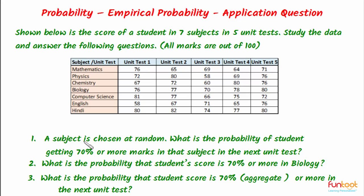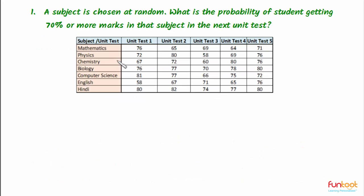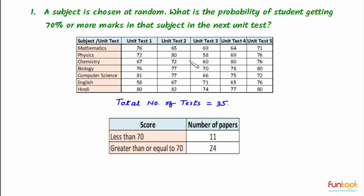First part is: a subject is chosen at random. What is the probability of the student getting 70% or more marks in that subject in the next unit test? There are 7 subjects and for each subject there are 5 tests, so the total number of tests written by the student is 35. From the marks of 35 tests, those scores which are less than 70 will be 11, and those scores which are greater than or equal to 70 will be 24.